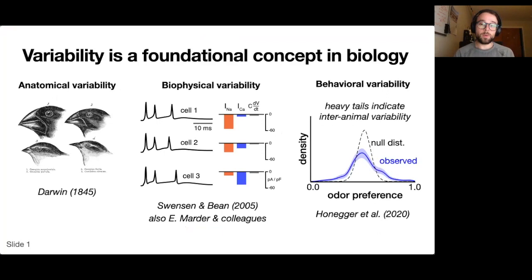There's also a very well-established literature on behavioral variability in neuroethology. The example paper cited here shows that there are idiosyncratic odor preferences across fruit flies that arise naturally. Overall, these kind of results are very important for our understanding of how neural circuits and behavior adapt and evolve.